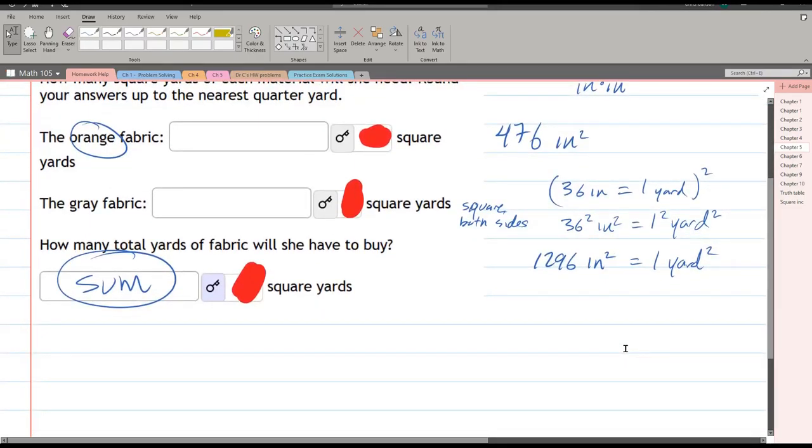We want to go from inches to yards. So I'm going to divide both sides by this or multiply by the reciprocal. We get one on the left because it cancels out. And on the right we have one yard squared over 1296 inches squared. This is our unit conversion.